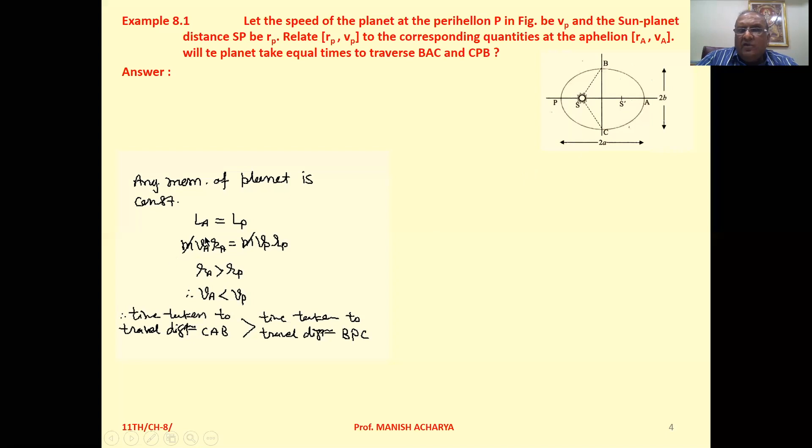The angular momentum of the planet at position A and at position P remains the same. So we can write L at A equals L at P. But angular momentum is mvr, so mass of the planet times velocity at A times rA, the distance of A from the Sun. Similarly at P we can write mvr: mass of planet, velocity at P, and the distance of P from Sun.